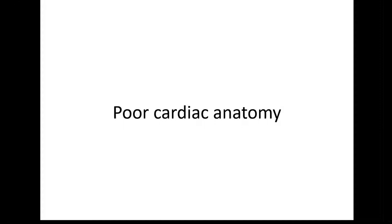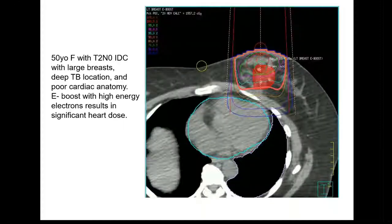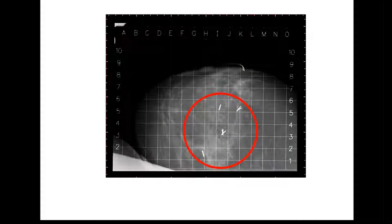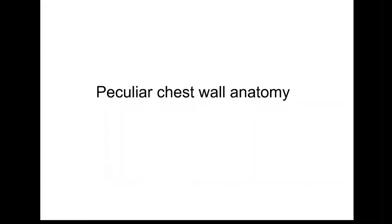Here is poor cardiac anatomy: an electron plan was generated and you can see significant dose being delivered to the anterior edge of the heart, particularly where the left anterior descending artery sits. This is clearly not ideal as we do our best to minimize cardiac irradiation. Once again we position the patient and compress her breast, and we're very readily able to target this deep tumor bed location in a large breast with zero additional cardiac irradiation.